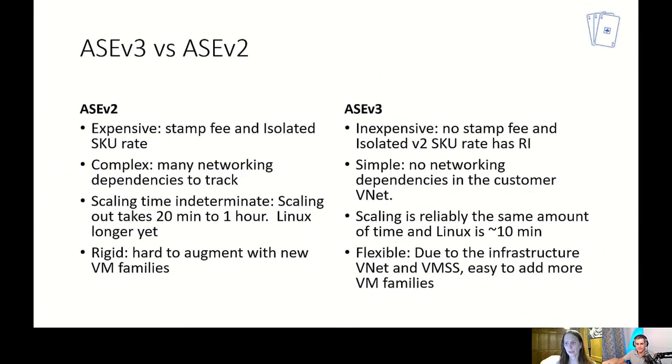Linux is much faster than it used to be — it's around 10 minutes right now to scale horizontally for Linux workloads. As far as virtual machine families go, with ASE v2 we were statically locked to dv2 hardware. With ASE v3, we've been re-platformed onto VMSS and have a separate network, so our plan after GA is to add additional VM families to the system and make it more flexible. ASE v3 is largely the future of Azure App Service — customers are going to want security, isolation, and single tenancy, and now ASE v3 is pretty much in the same price point as the rest of Azure App Service.